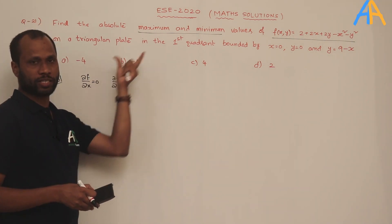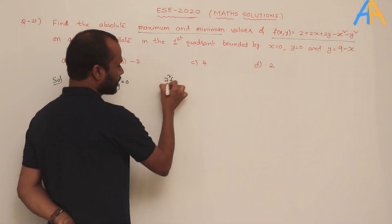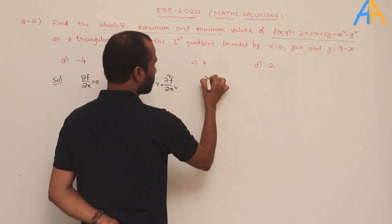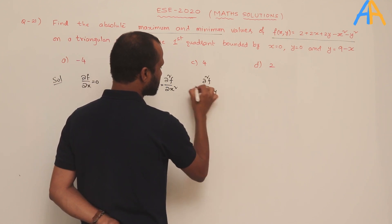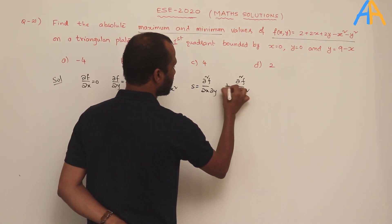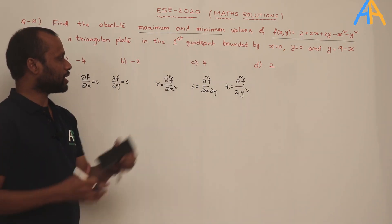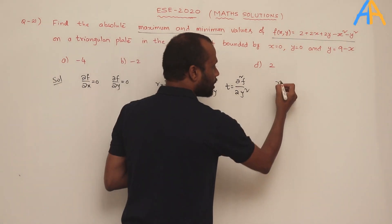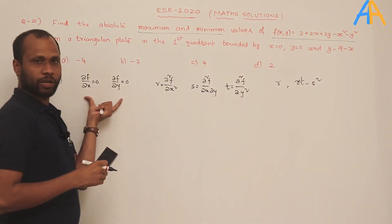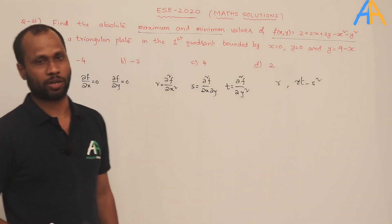Then we need to find the second derivatives: ∂²f/∂x², termed r; ∂²f/∂x∂y, termed s; and ∂²f/∂y², termed t. Based on the conditions involving r and rt − s², we can determine whether maxima, minima, a saddle point, or no extremum exists at the found point.